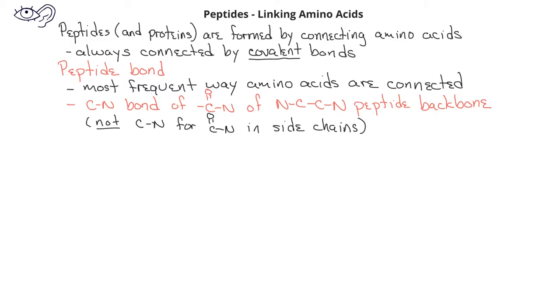In general, peptides are drawn from an N-terminal end on the left to the C-terminal end on the right. It's called an N-terminal end because the peptide bond ends with a nitrogen. It's called a C-terminal end because at the right end of the peptide chain is a carbonyl carbon.